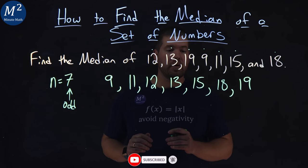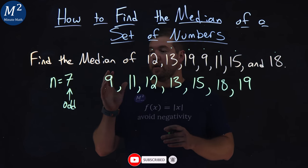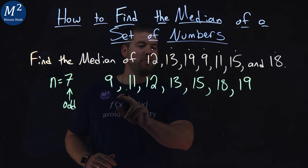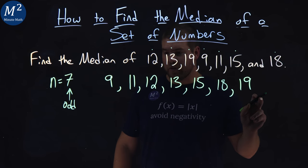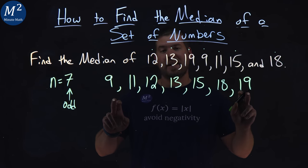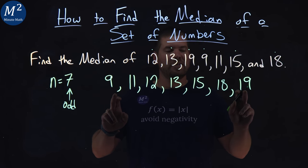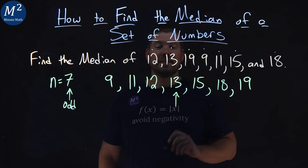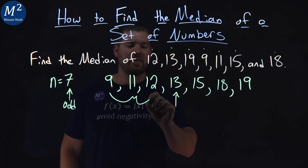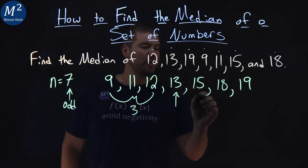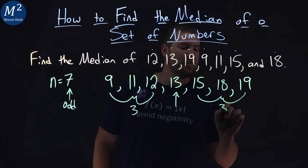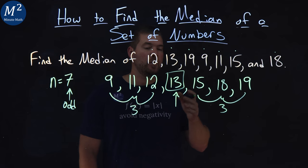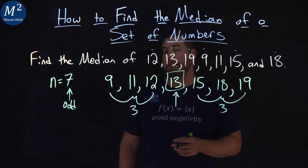So what we're going to do is find the middle. If 7 numbers are in the list, the middle will have 3 on one side and 3 on the other. You can count your way down — 1, 2, 3 — and 13 is going to be in the middle. We got 3 numbers here and 3 numbers right there, and so 13 is going to be our median.